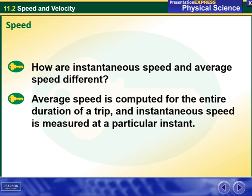How are instantaneous speed and average speed different? Average speed is computed for the entire duration of a trip, and instantaneous speed is measured at a particular instant.